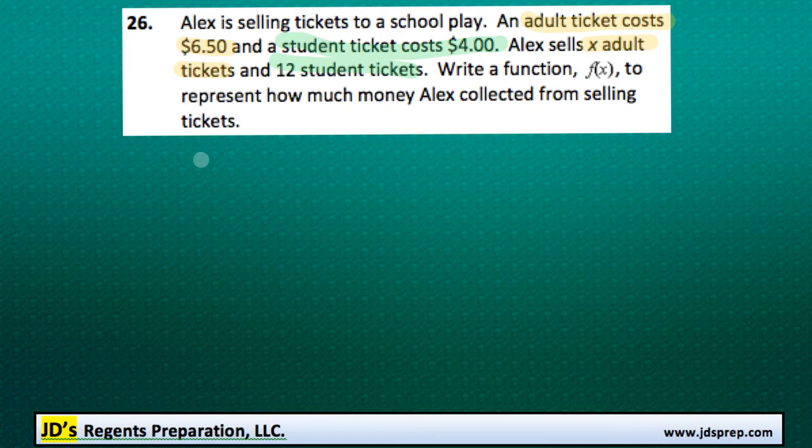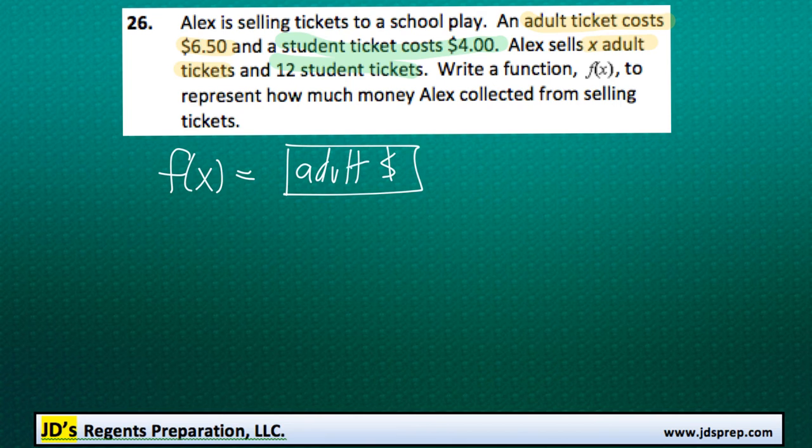In the end, we know that the function is going to be a combination of the amount of money he earned from adult tickets plus the amount of money he's going to collect from the student tickets.